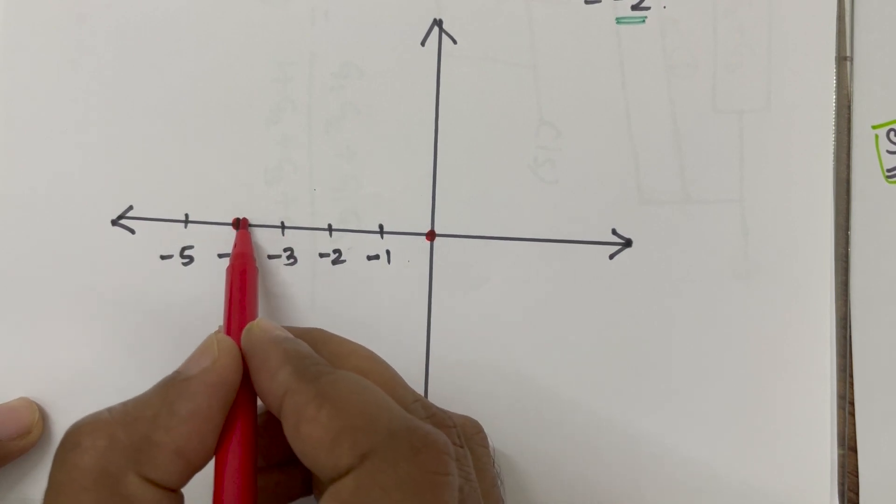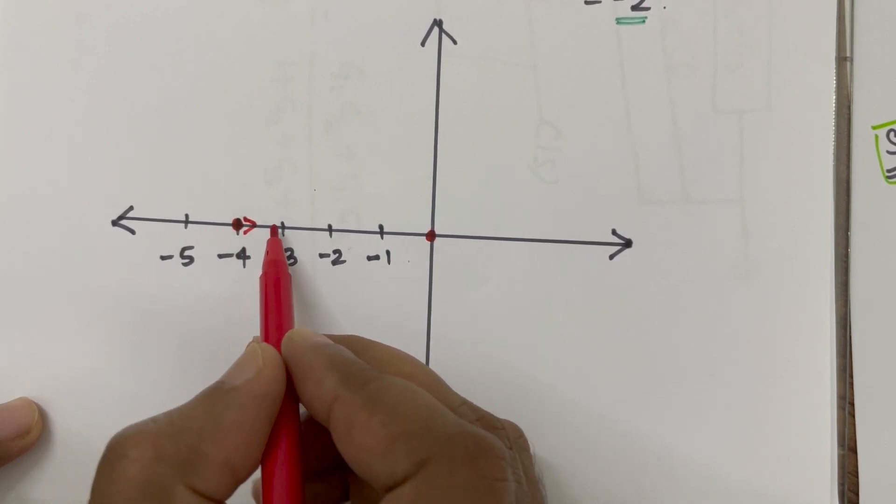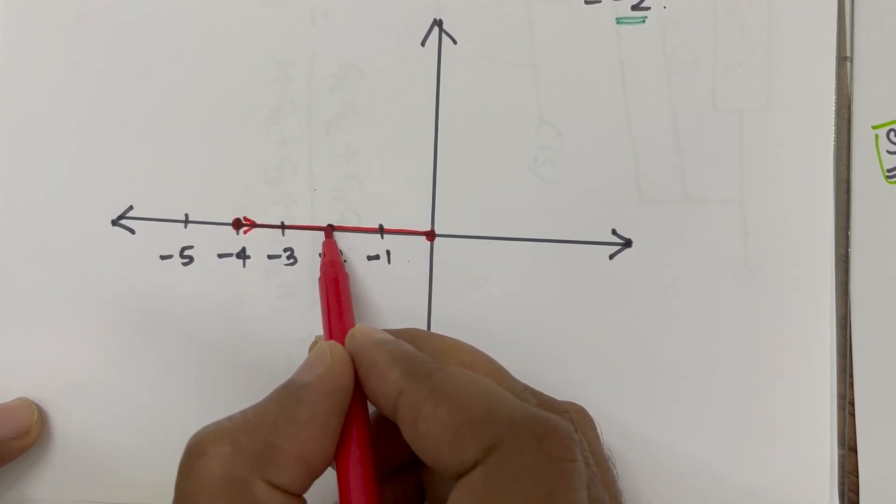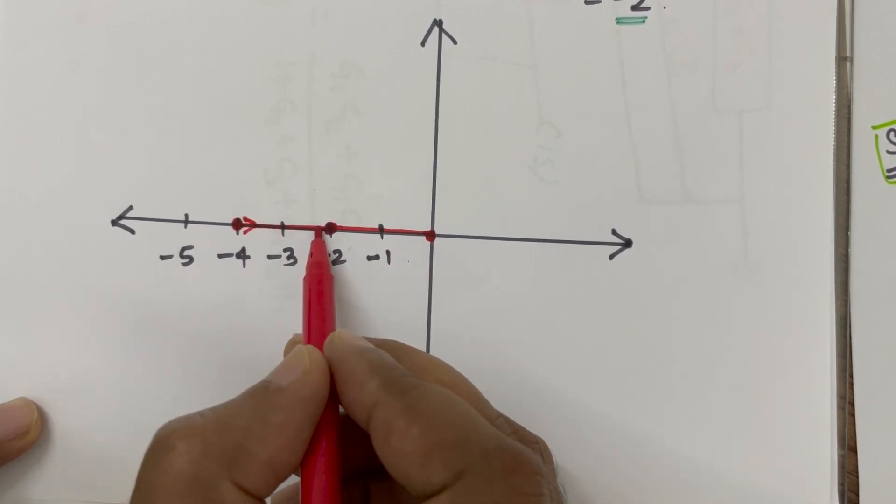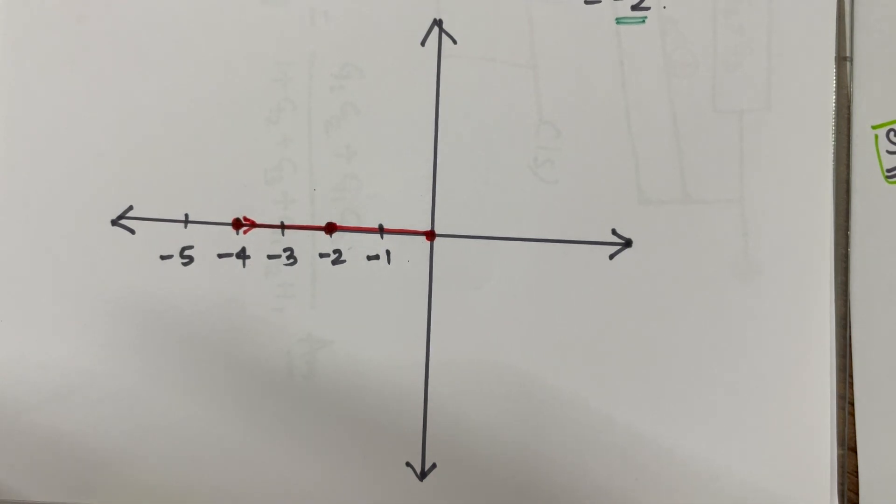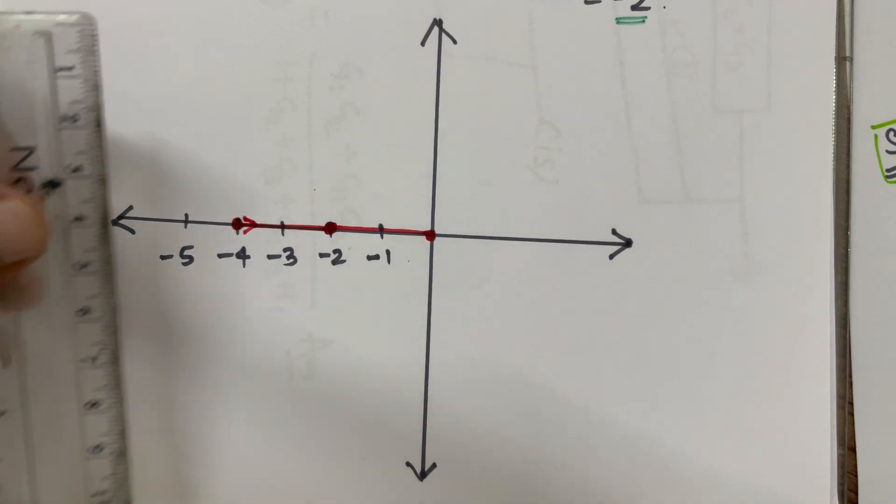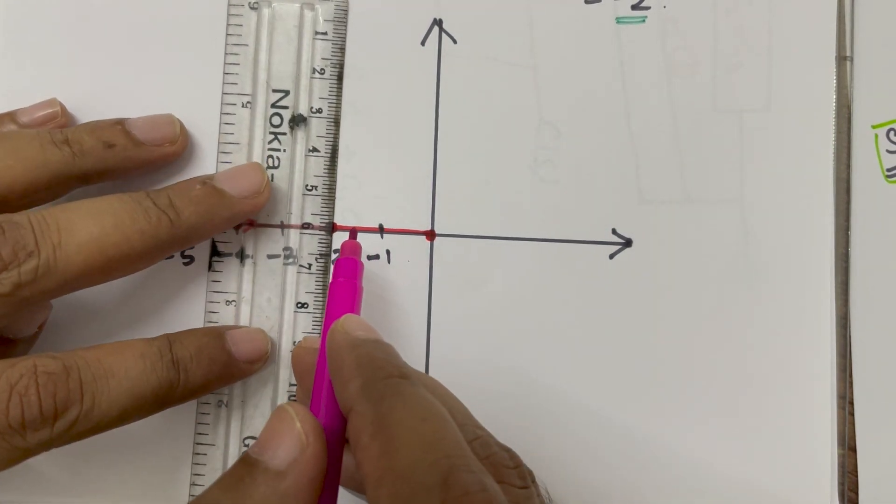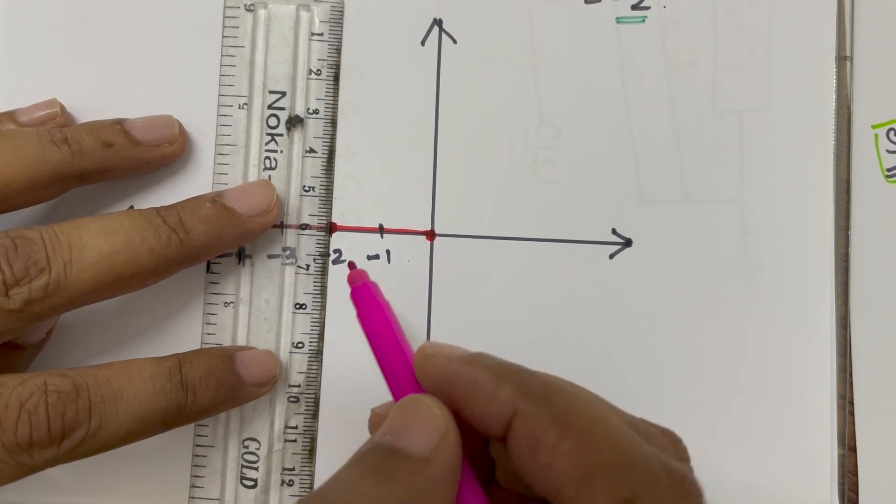So, it will start from minus 4 and it will break away from this point. Now, the asymptote we are going to draw will be at 90 degree and minus 90 degree. So, 90 degree is easy to draw. We don't have to use protector. 90 degree is just the vertical line.